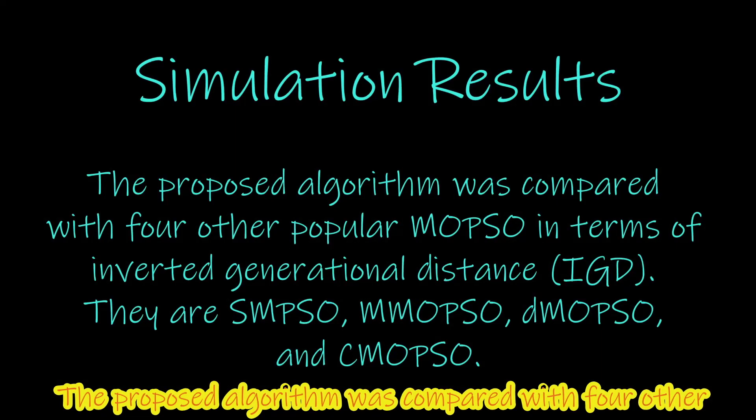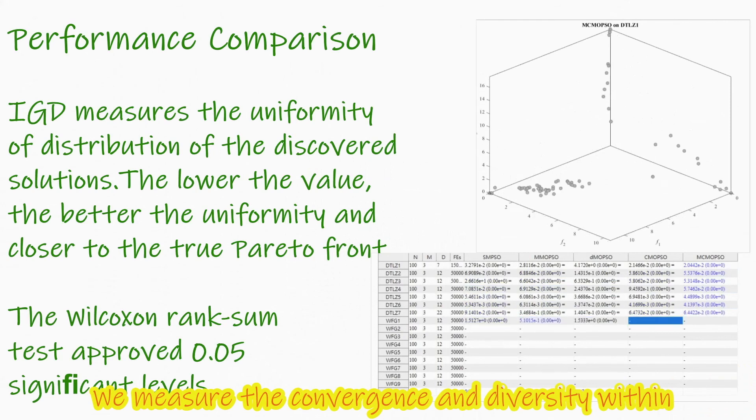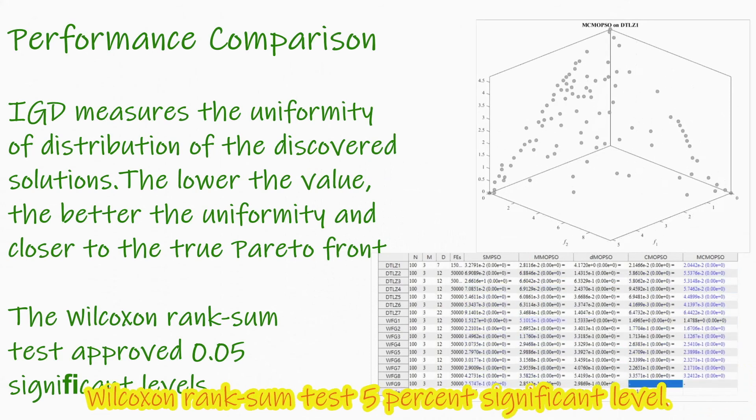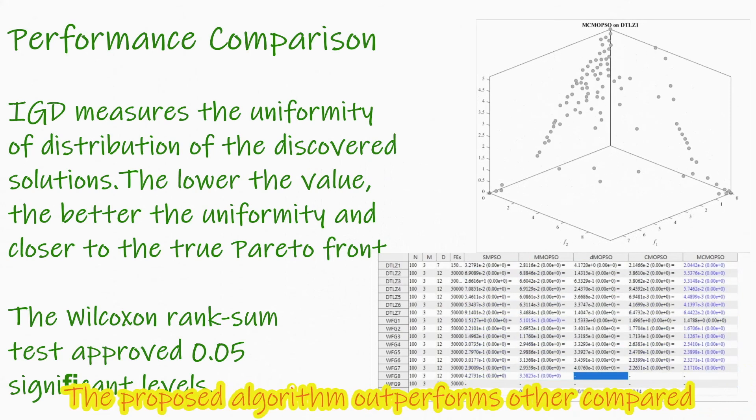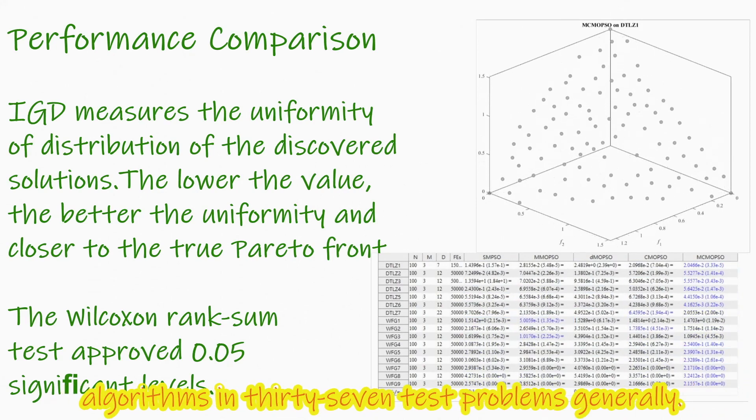The proposed algorithm was compared with four other popular MOPSO in terms of inverted generational distance. They are SMPSO, MMOPSO, dMOPSO, and CMOPSO. We measure convergence and diversity within Wilcoxon rank sum test 5% significant level. The proposed algorithm outperforms other compared algorithms in 37 test problems generally.